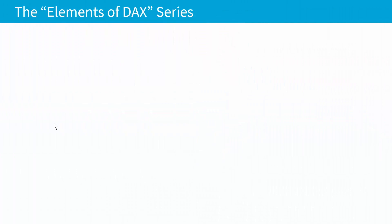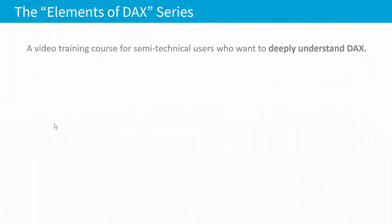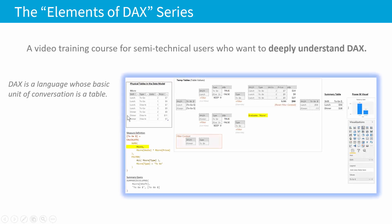What is the Elements of DAX? This is a video training course for semi-technical users who want to deeply understand DAX. DAX is a language whose basic unit of conversation is a table, which means if you were to look inside of it, what you would find is that it starts with tables, it produces tables, and all the while, in the process of creating these tables, it uses more tables.